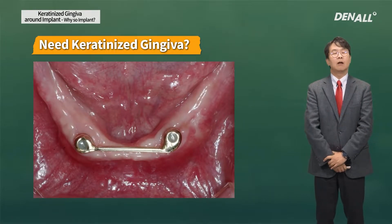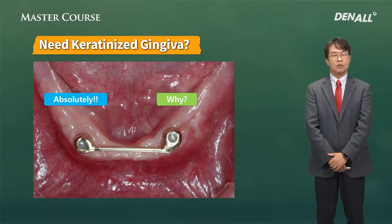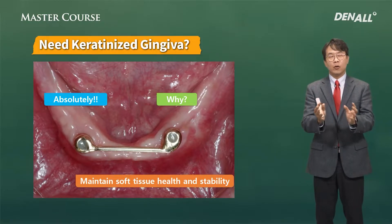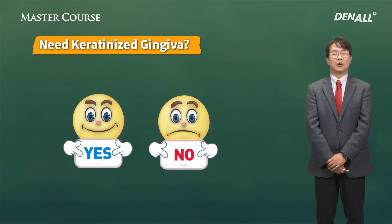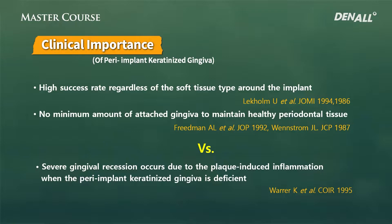Do we need keratinized gingiva or not? Some say absolutely necessary, and some say why do we need it. What is important is we need to maintain soft tissue health and stability around an implant. There have been two contradictory views. One group says presence or absence of keratinized gingiva doesn't matter. Another report said severe gingiva recession occurs due to plaque-induced inflammation when peri-implant keratinized gingiva is deficient. The controversy still continues.